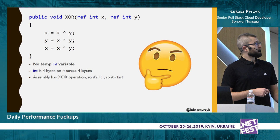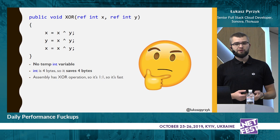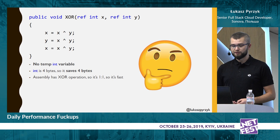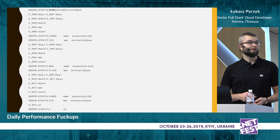With XOR, we don't have an additional temp variable. We may say that we save four bytes, because that's the size of an int. Maybe the XOR operation is somehow implemented in the CPU — some special instruction. Maybe the CPU knows that if we have three XOR operations in a row, it can do some tricky optimizations. I have a printout from assembly and IL, the intermediate language, but let's jump to typical assembly.